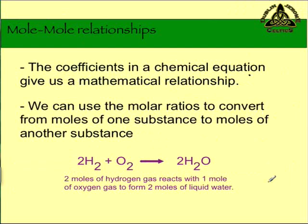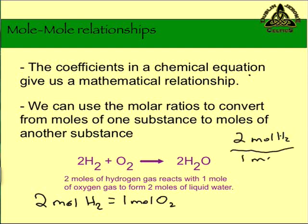The coefficients in a chemical equation can give us a mathematical relationship. We can use the molar ratios to convert from moles of one substance to moles of another substance. In the equation 2H2 plus O2 makes 2H2O, I have a relationship between H2 and O2. Two moles of H2 equals one mole of O2, and I can write that out as a ratio. Two moles of H2 for every one mole of O2. And I can write that ratio inversely as well, one mole of O2 for every two moles of H2. We're going to use these ratios to convert from moles of one substance to moles of another substance.